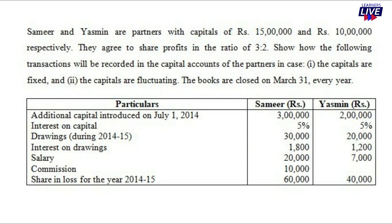Now we will have a question. Samir and Yasmin are partners with capitals of Rs. 15 lakhs and Rs. 10 lakhs respectively. They agreed to share profits in the ratio of 3 to 2. Show how the following transactions will be recorded in the capital accounts of partners in case the capitals are fixed and the capitals are fluctuating.